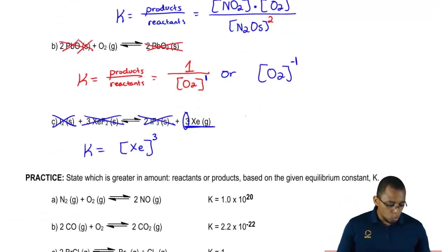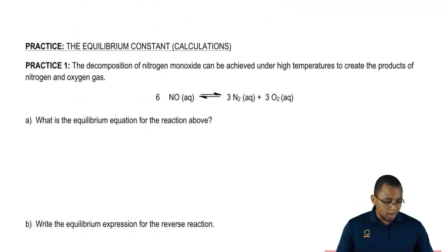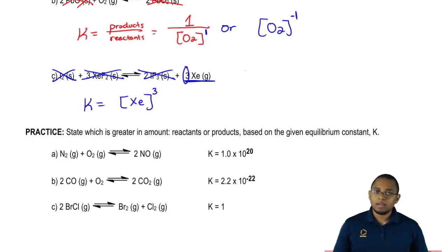Here I want you to tell me who's greater in amount. Is it products or is it reactants? From that, you have to remember what do we say about K? When it's greater than 1, who's favored? When it's less than 1, who's favored? When it's equal to 1, who's favored? Remembering that will be a great way for you to approach this problem. Good luck guys. Bye!